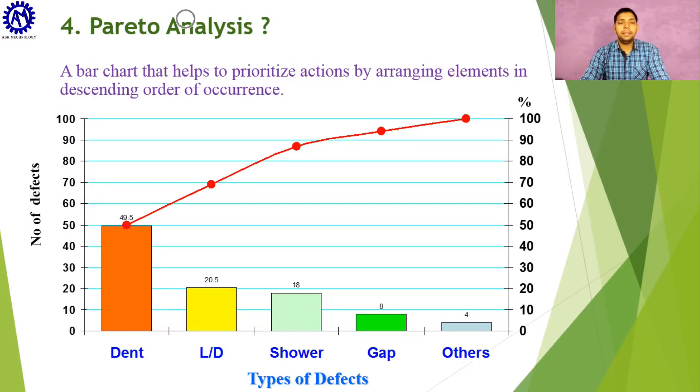After that, let us discuss Pareto analysis, which is an important tool of 7 QC tools. It is a bar chart in which we prioritize any action and arrange it in descending order. You can see here a Pareto chart in which on the left side number of defects is written, and underneath some types of defects are shown in which dent defect has the highest frequency, followed by light dent and then shower gap. Others are arranged in descending order. A red line on the upper side shows cumulative frequency percentage.